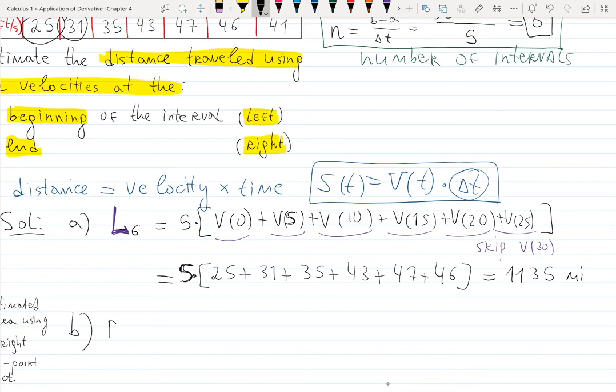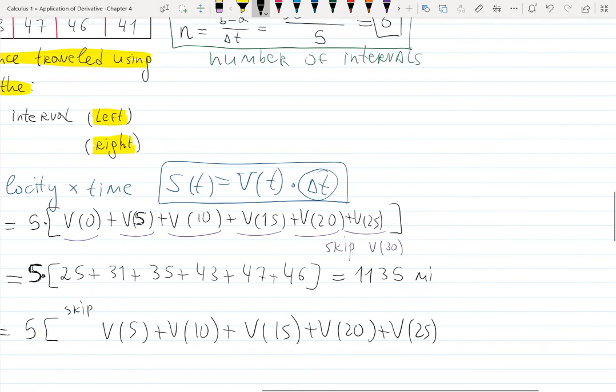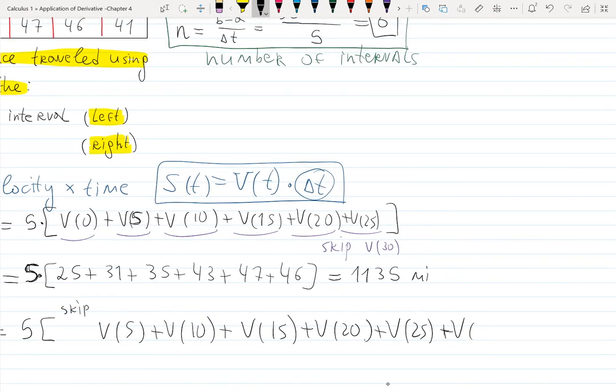Using right endpoints with the six intervals, five is still the same, but now I'm skipping v(0). Now we'll have v(5) + v(10) + v(15) + v(20) + v(25), and the extra at the end will be v(30).